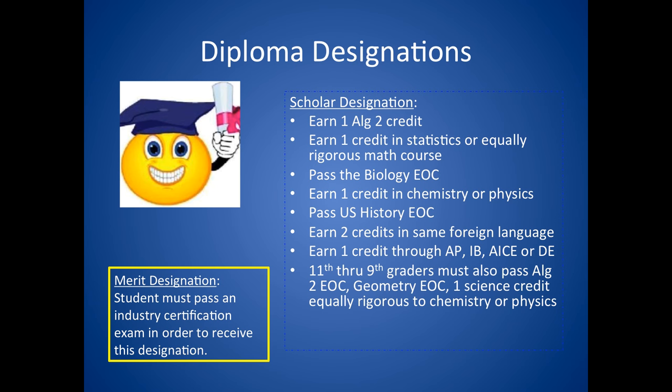A few years ago, the Florida legislature passed a law that allows students to earn designations on their diplomas. There are two types of designations: the scholar designation and the merit designation, and students can earn one or both. The scholar designation requires a great deal of dedication to high-level academics. For the merit designation, a student must pass an industry certification exam. The following programs at PHS offer industry certification exam opportunities: culinary, automotive, agriculture, welding, health, biomedical, engineering, business, and digital photography.